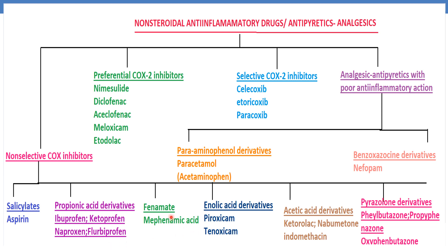Next is phenamate; the drug is mefenamic acid. Next are enolic acid derivatives; the drugs are piroxicam and tenoxicam. Next are acetic acid derivatives; drugs include ketorolac, nabumetone, and indomethacin.